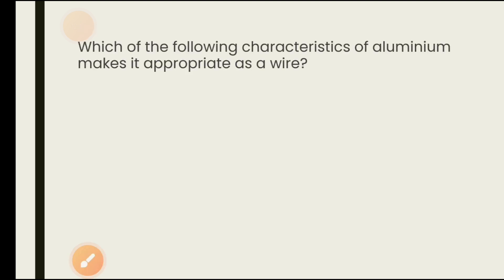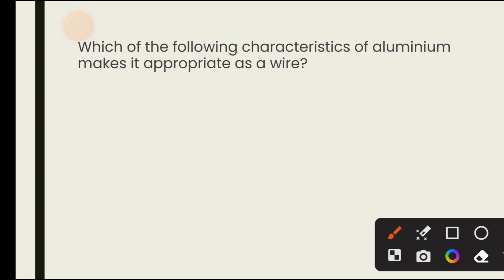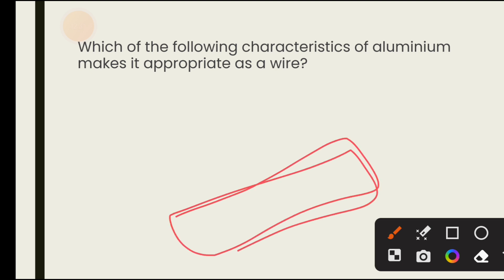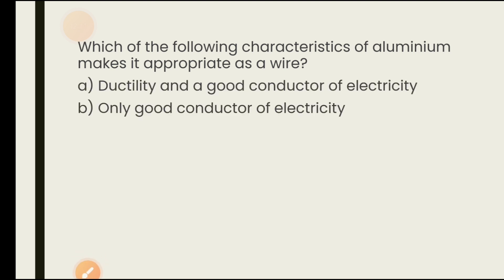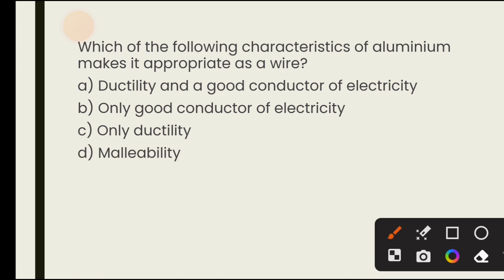Which characteristics of aluminium make it appropriate as a wire? Aluminium is a metal, so it is a good conductor of electricity. It also has the property of ductility. The answer is option A — ductility and good conductivity of electricity.